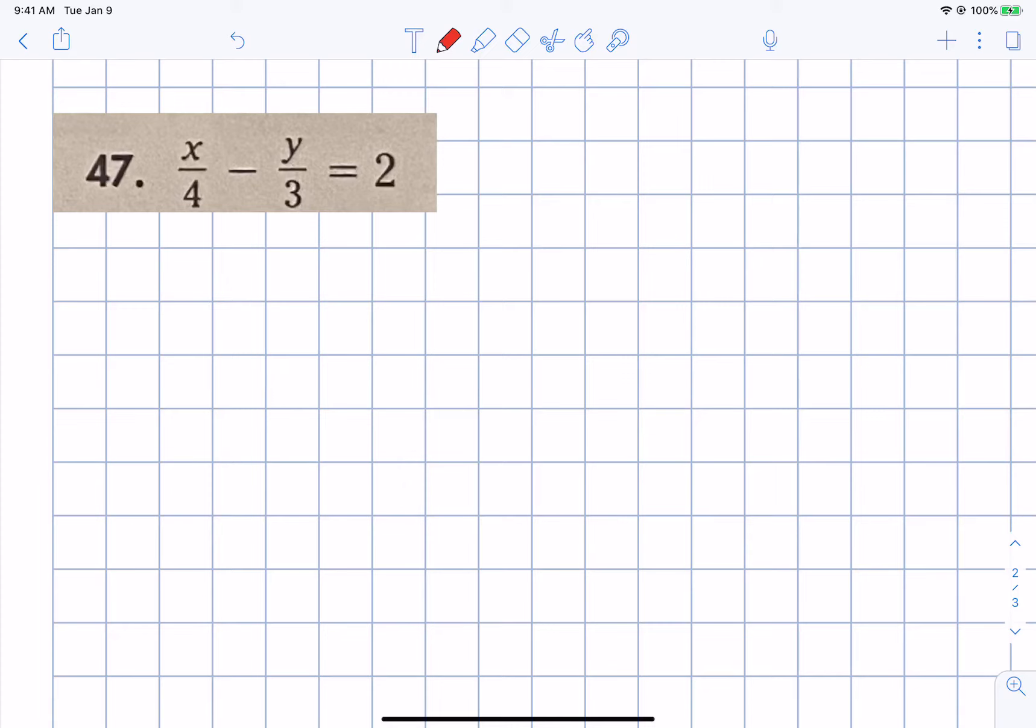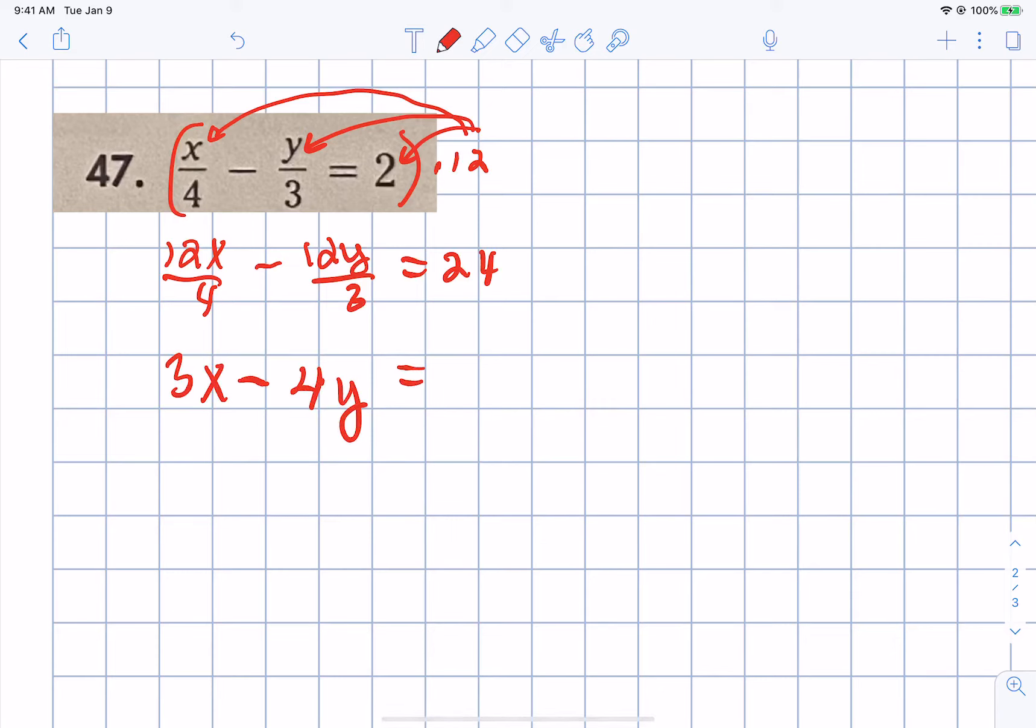12, yeah, that's correct. And so what we're going to do is multiply by 12. When we multiply the fractions by 12, the tops get multiplied by 12. When we multiply the 2 by 12, it's just 2 times 12. So when we multiply on this top here, it's 12x divided by 4 and then 12y divided by 3 and then 12 times 2. You don't have to show that step. You can do in your head 12x divided by 4, that's going to be 3x. And 12y divided by 3 is going to be 4y equals 24.